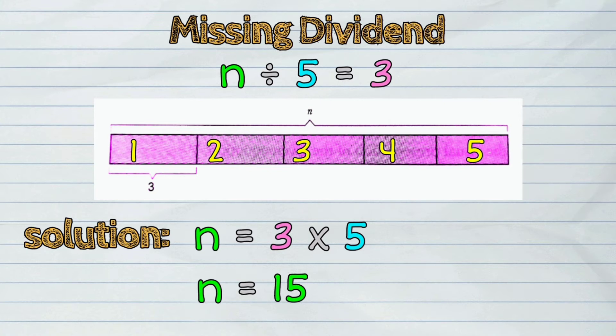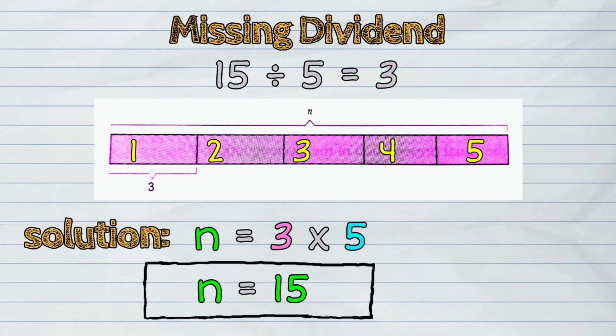Therefore, the missing dividend is 15. So it's 15 divided by 5 equals 3.